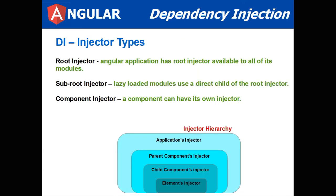There are more injector types. When you start doing Angular 4, you use the ones described most often. There is a root injector — the Angular application has a root injector available to all its modules. There's a sub-root injector — lazy loaded modules use a direct child of the root injector. And there's a component injector — the component can have its own injector. There's actually an injector hierarchy which you can examine to determine which injector you're using.